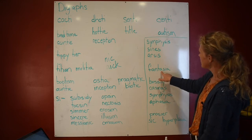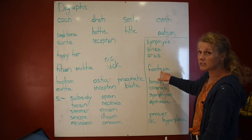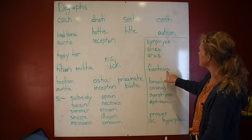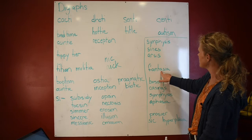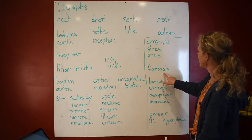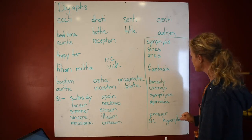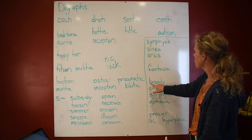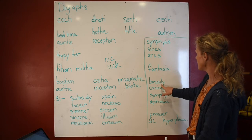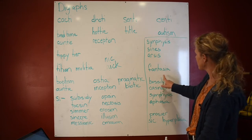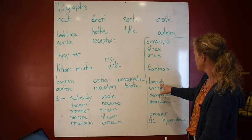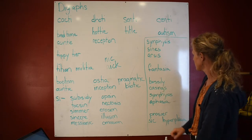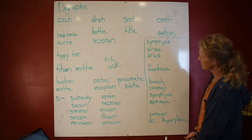But look — this one has a vowel in front of it and behind it, so this will say 'zh' because of the vowel. 'Fantasia.' Now this SI is a base word — 'boss,' 'bossy,' 'bossily' — change the Y to I and add on your suffix. That is not a consonant, so you know that is not a digraph. Same thing here — this is the base word 'case.' Drop the E and add your vowel suffix: 'casings.'